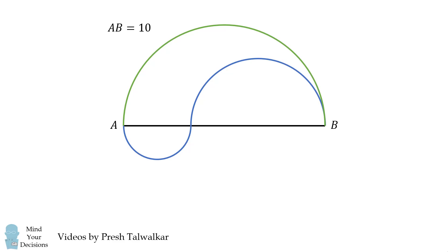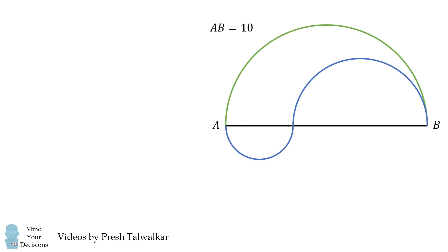Suppose AB has a length of 10. Now focus on just the green curve and the blue curve. How does the length of the blue curve compare to the length of the green curve? It's a multiple choice question.